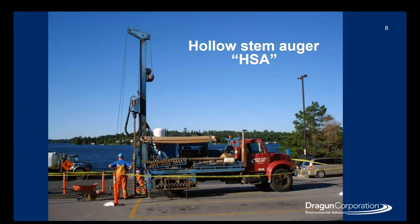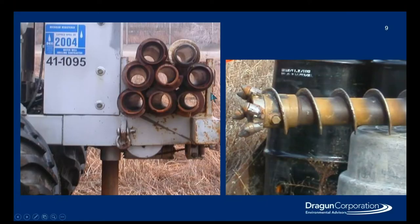The first rig is a hollow stem auger, as seen in the photo here. This is a fairly large machine and has a pretty good capability to get down to depth. As the name indicates, it's a hollow stem auger — they use steel augers that are hollow inside with a cutting head to get down to depth and collect samples through the hollow part of the rig.